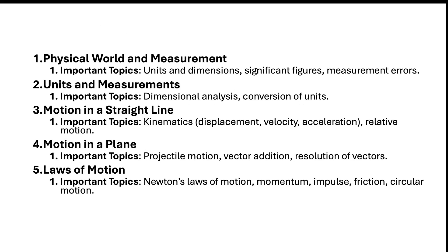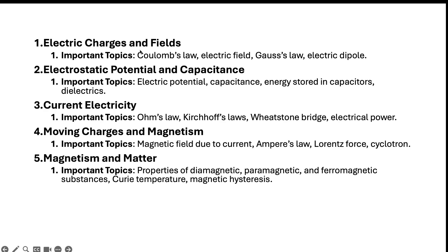Now moving to the 12th class topics: the first topic is Electric Charges and Field, which is basically Electrostatics. You must know Coulomb's Law — how to apply it in vector format. For the electric field, you must know the formula for a sheet, a non-conducting sheet, an infinite wire, and similar bodies. The same goes for electric potential. You must know what a Gaussian surface is and how to calculate the flux when a charge is placed inside a body, outside a body, or at a corner of a cube. You must also know what an electric dipole is and how to apply the formula.